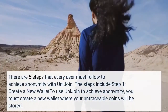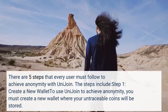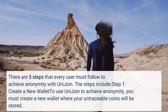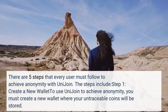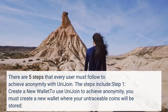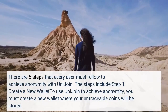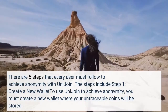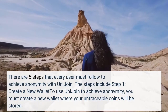There are 5 steps that every user must follow to achieve anonymity with Unijoin. Step 1: Create a new wallet. To use Unijoin to achieve anonymity, you must create a new wallet where your untraceable coins will be stored.